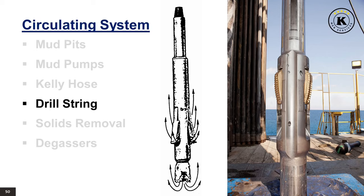Under-reamers are used for drilling or opening out a hole below a restriction such as imposed by the blowout preventer assembly. They are run above a conventional roller bit with their cones on collapsible arms, enabling them to pass through a narrow opening. When required, the arms can be opened — usually by drilling fluid pressure — to drill a larger hole.